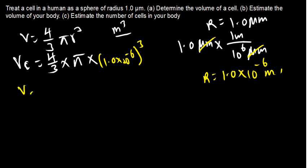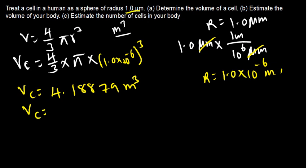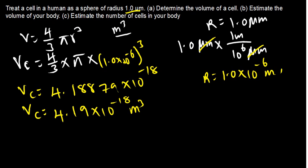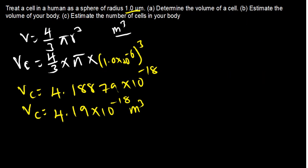The answer I am getting is the volume of the cell equals 4.18879 cubic meters — but expressing this in scientific notation with two significant figures to match the given radius, we get Vc = 4.19 × 10⁻¹⁸ cubic meters.